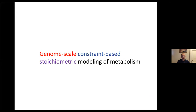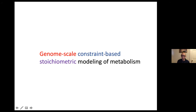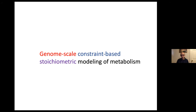We're going to start talking about genome scale constraint-based models of metabolism. These models are known in different ways: genome scale models, constraint-based models, or stoichiometric models. They are genome scale because one tries to model the whole metabolic network of a cell; constraint-based because we rely strongly on constraints mostly related to mass conservation; and stoichiometric because they are based on the stoichiometry of the different reactions in the cell.